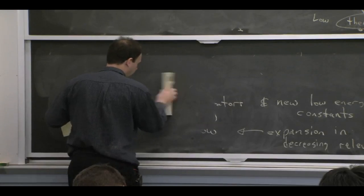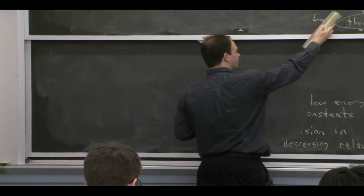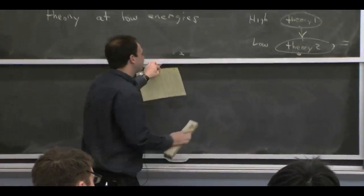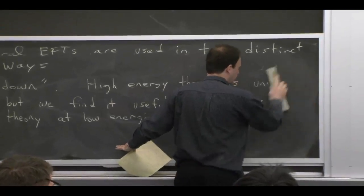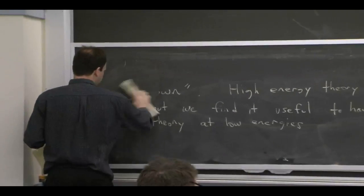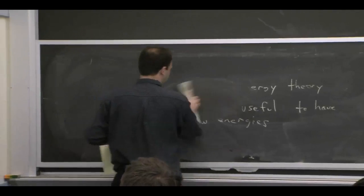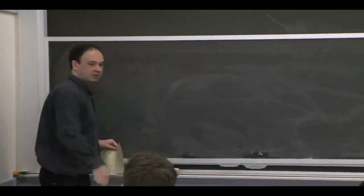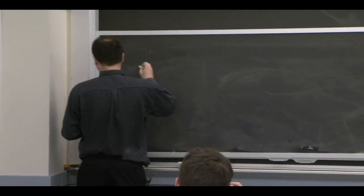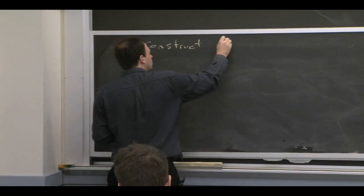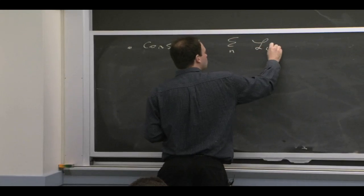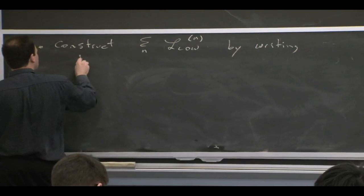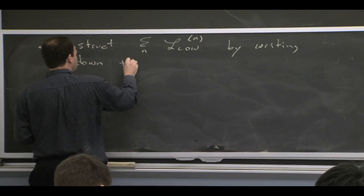You may need to know some things about the high energy theory — like that it's Lorentz invariant, that it has certain gauge symmetries, that it's not totally crazy — but you don't need to carry out calculations with it to construct the low energy theory. Instead, you think about the low energy theory from the bottom up, devising it based on the symmetries, based on your power counting, and based on identifying the degrees of freedom. You construct this series simply by writing down the most general operators you can think of.